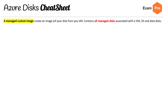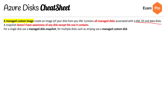For the last page on Azure disks: a managed custom image can create an image of your disk from your VM and contains all managed disks associated with the VM — both OS and data disks, so all three. A snapshot doesn't have awareness of any disk except the one it contains, so it's for a single disk. For multiple disks, you use a managed custom image. Know the difference for your exam.